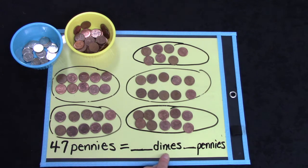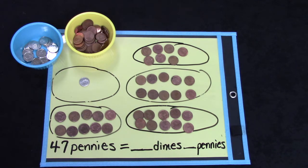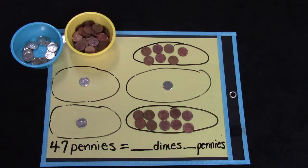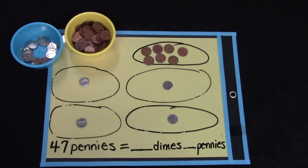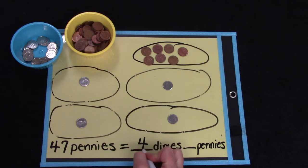How many dimes can I trade for? Let's see. 1, 2, 3, 1 dime, 2, 3, and 4. I was able to trade 40 of our 47 pennies for 4 dimes.